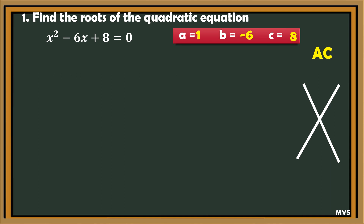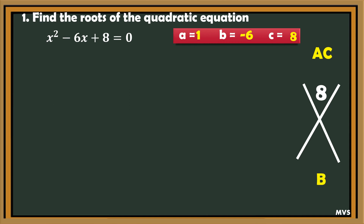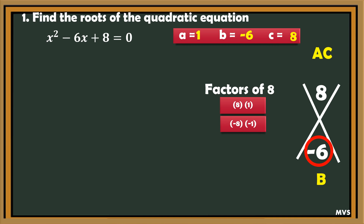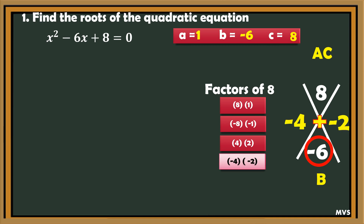What is the value of a? 1. How about c? 8. Then multiply the two — the product is 8. Next, what is the value of b? Let us determine the factors of 8 wherein the sum of the factors is negative 6. Since 8 is positive, we choose both positive or both negative factors. The factors are: 8×1, negative 8×negative 1, 4×2, negative 4×negative 2. Which gives the sum of negative 6? Negative 4 times negative 2.